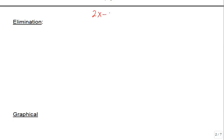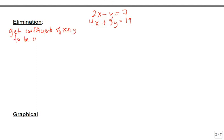Now we're going to do this same exact system using what's called the elimination method, sometimes called the addition method. The idea behind the elimination method is to get the coefficients in front of either the x's or the y's to be the same exact number but with opposite signs. Once we get that to happen, we add the two equations together.